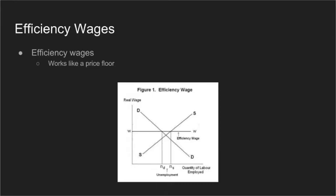A second source of wage inequality is the phenomenon of efficiency wages, which is a wage paid when an employer pays above the competitive wage level as an incentive for workers to be more productive and reduce employee turnover. This works as a price floor in that it creates a surplus of workers who want an efficient wage, causing those with jobs to work harder in order to keep them.